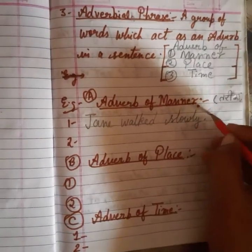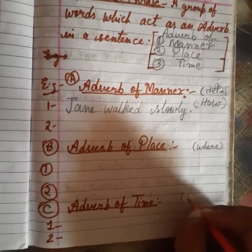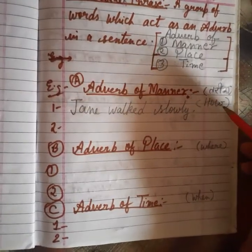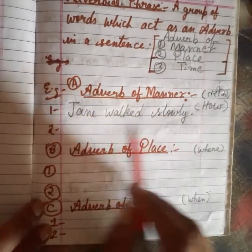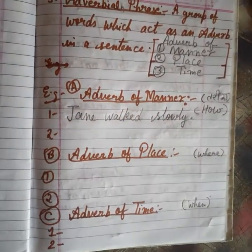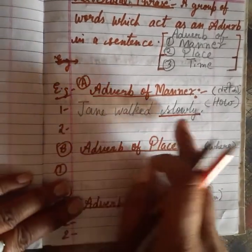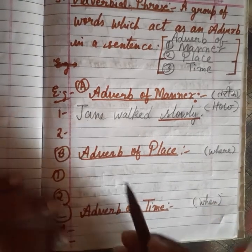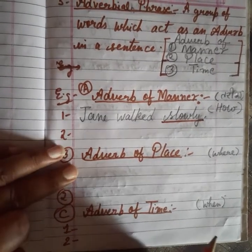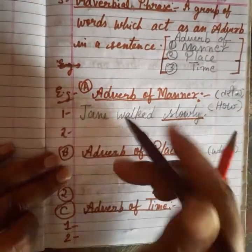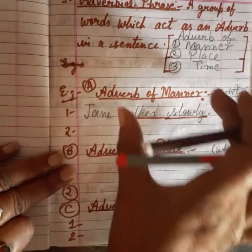Adverbial phrase of manner में 'how' करके answer मिलेगा। 'Jane walked slowly' में — 'walked slowly' यहाँ adverbial phrase है। Jane, फिर 'walked slowly' — 'walked slowly' adverbial phrase हो जाएगा।